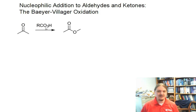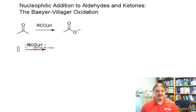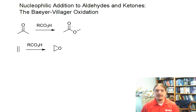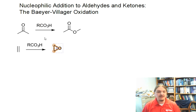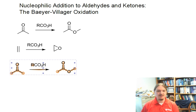Peroxy acids — we've only ever seen them one other place in organic chemistry, and that is in the conversion of alkenes to epoxides. So these are not reagents that have a whole lot of other uses. A variety of peroxy acids can be used — peroxy acetic acid, where R is methyl — but in general, a favored compound here is metachloroperoxybenzoic acid.